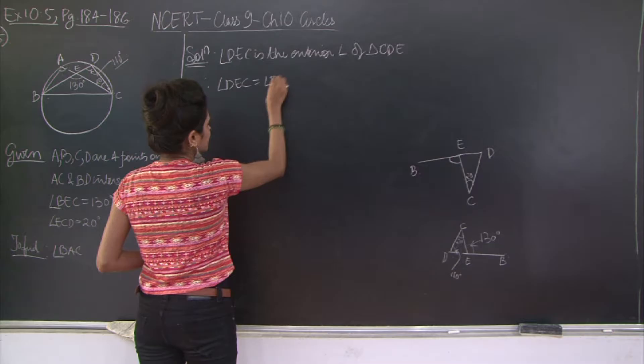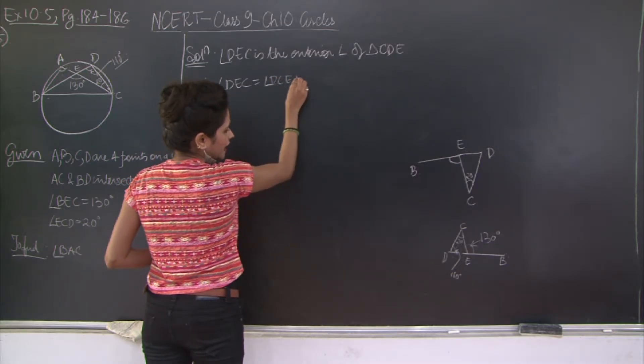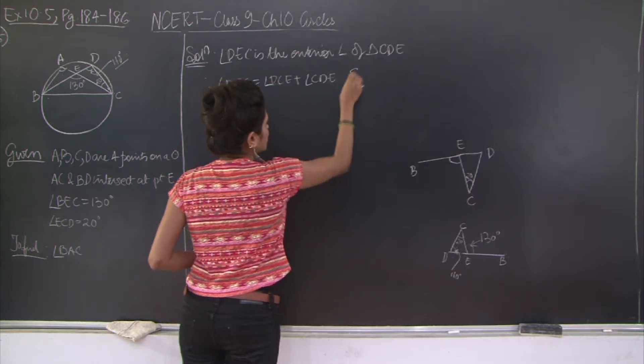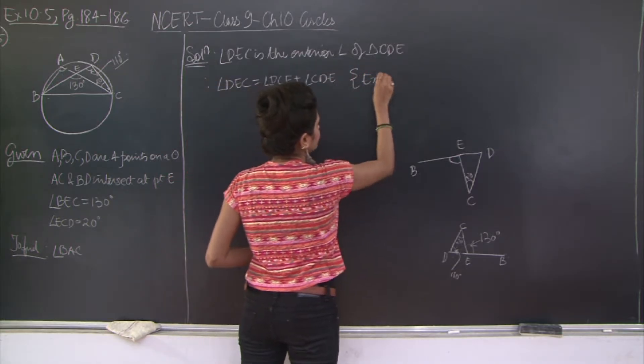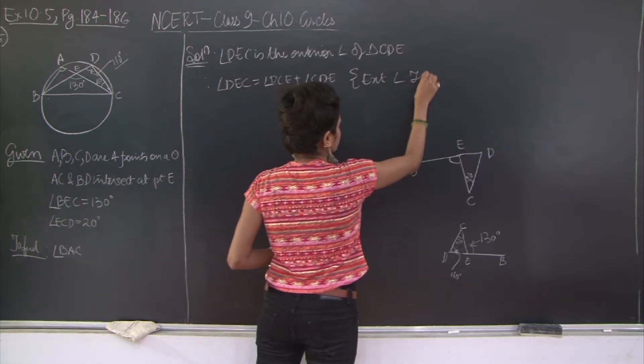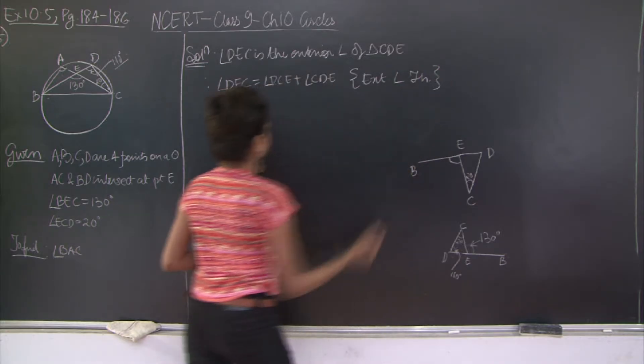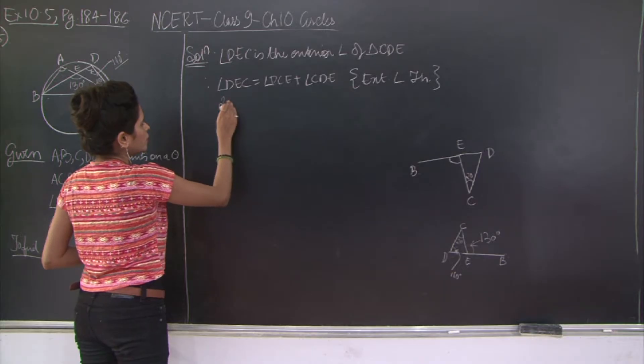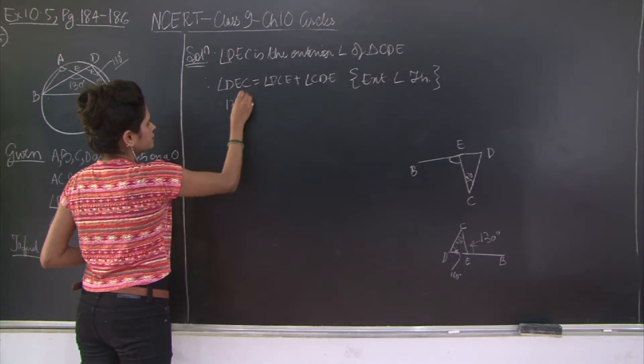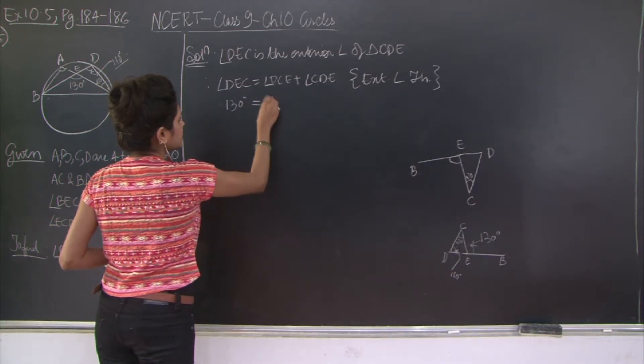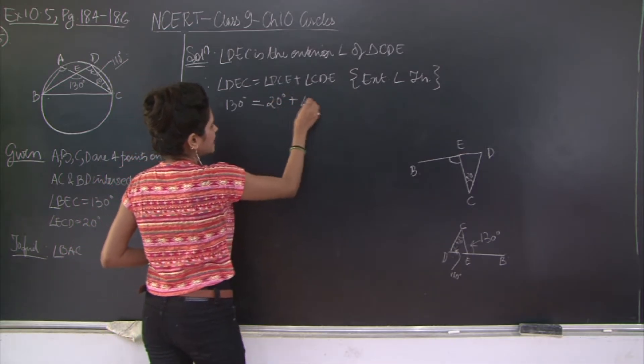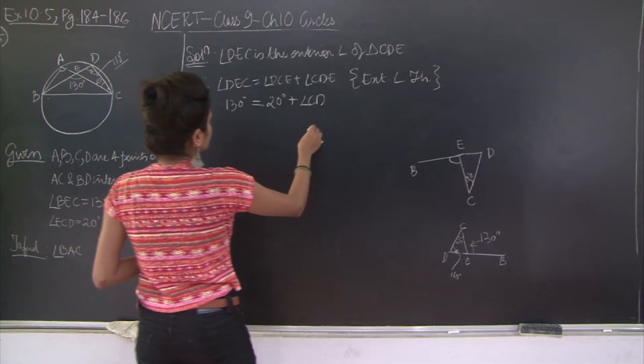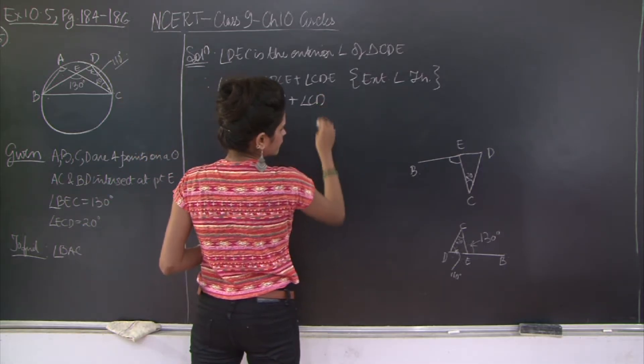Therefore angle DEC is equal to angle DCE plus angle CDE through the exterior angle theorem. But DEC is how much? It is 130 and DCE is 20 plus angle CDE.